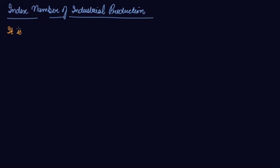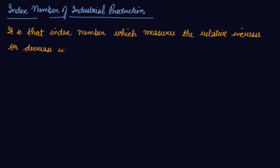Index number of industrial production is that index number which measures the relative increase or decrease in the level of industrial output